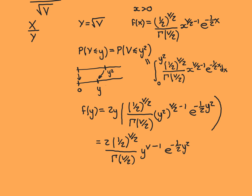We'll have a break here. In the next video we'll consider how X over Y is distributed — remember X and Y are independent, which is very important and helps us a great deal. We'll then work out how the T-distribution is distributed.